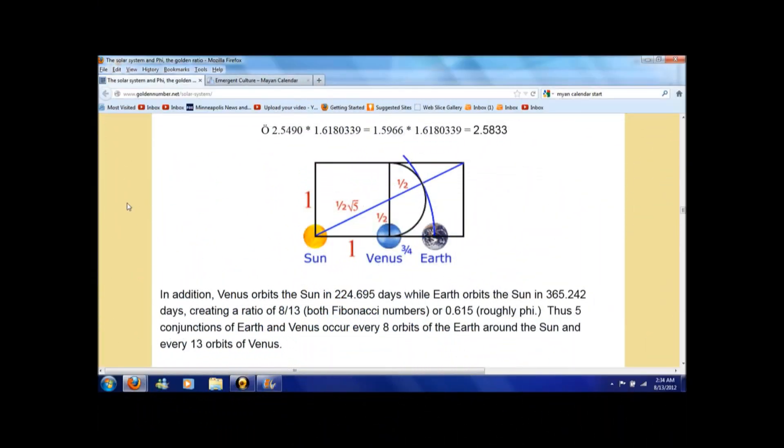Hey everybody, just a quick video on the numbers 8 and 13 and their relation to Venus and the Earth. This is goldennumber.net and they had a simple diagram I could use real quick.